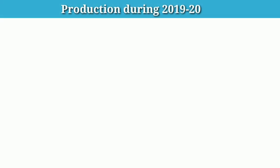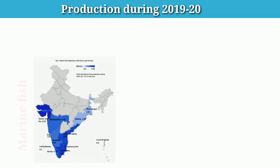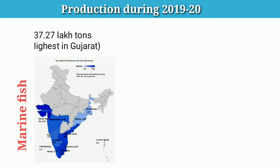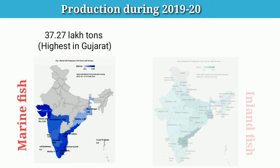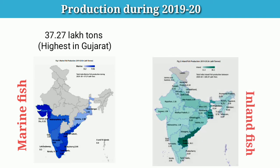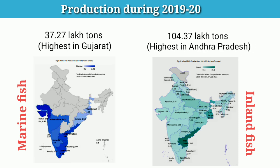If we talk about the production data, the marine fish production in India during 2019-20 is highest in Gujarat. And the inland fish production in India during 2019-20 is highest in Andhra Pradesh, followed by West Bengal.